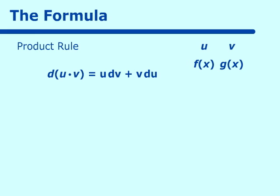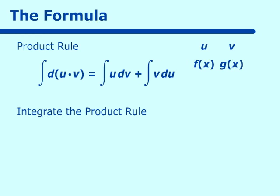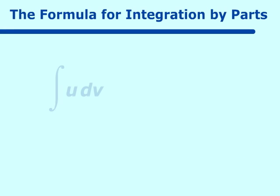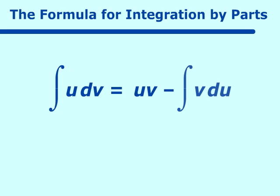When we want the anti-derivative, we put the integral symbols in. The integral of a derivative is whatever is inside, so that's U times V, equal to the integral of U dV plus the integral of V dU. Switching around and solving for U dV, we get the integral of U dV equals U times V minus the integral of V dU. This is our basic formula for integration by parts.